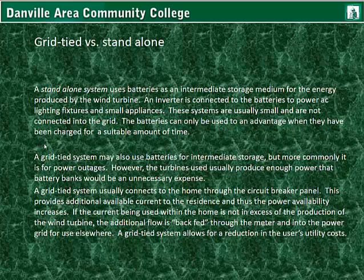A grid-tied system may also use batteries for intermediate storage, but more commonly batteries are used for power outages. However, the turbines used usually produce enough power that battery banks would be an unnecessary expense for larger grid-tied systems. A grid-tied system usually connects to the home through the circuit breaker panel, or load center. This provides additional available current to the residents. If the current being used within the home is not in excess of the production of the wind turbine, the additional flow is back-fed through the meter and into the power grid for use elsewhere, reducing utility costs.